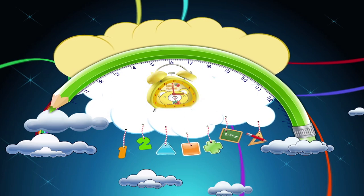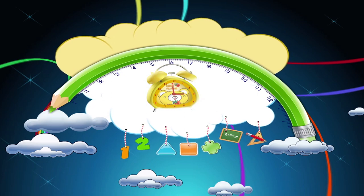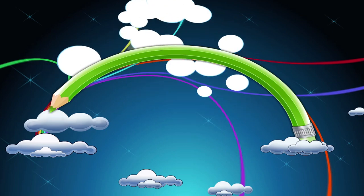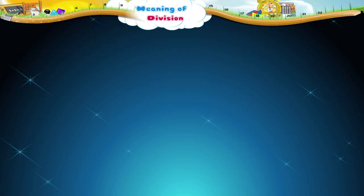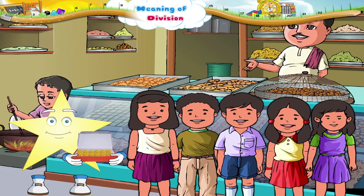Starry, look at all the sweets you have with you. You can't possibly eat them alone — you will get sick. You are planning to divide them among your friends, but you don't know how to.